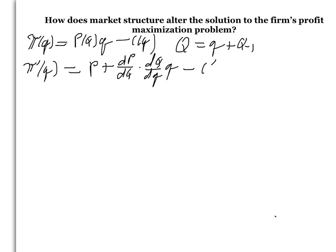The q that maximizes profits sets the first derivative equal to 0. I'm going to assume that the second order condition for a maximum is met.